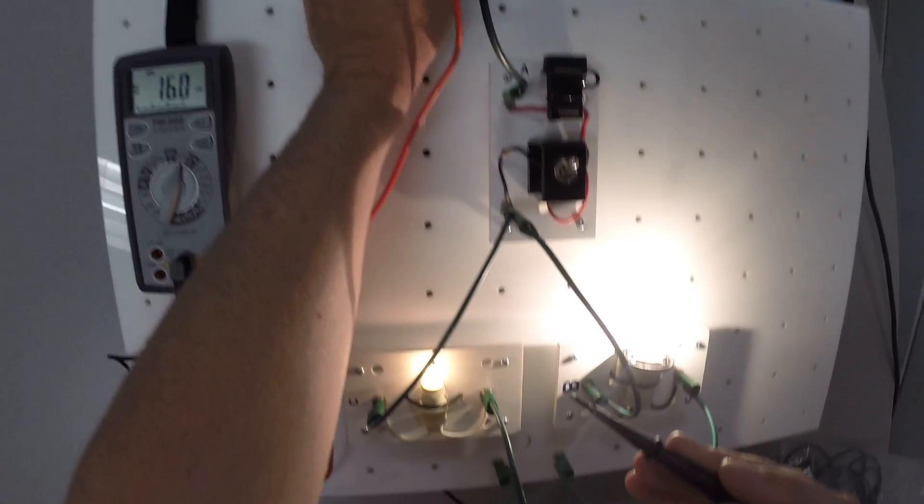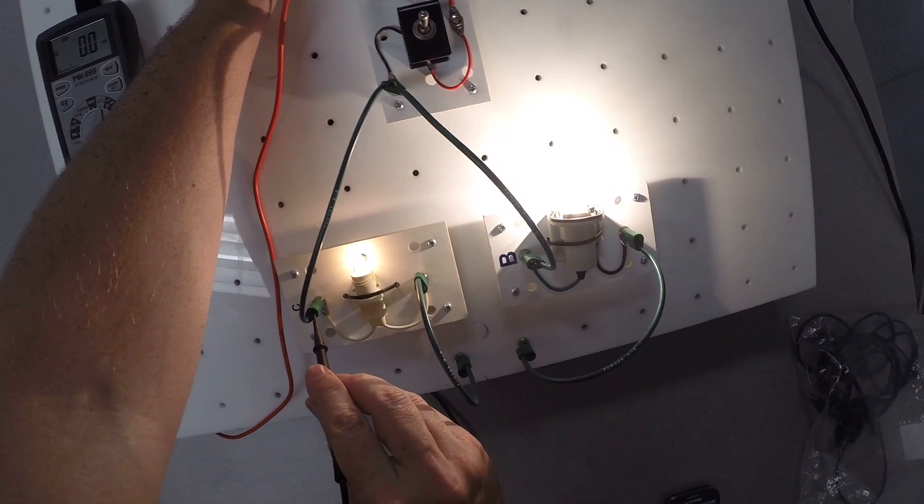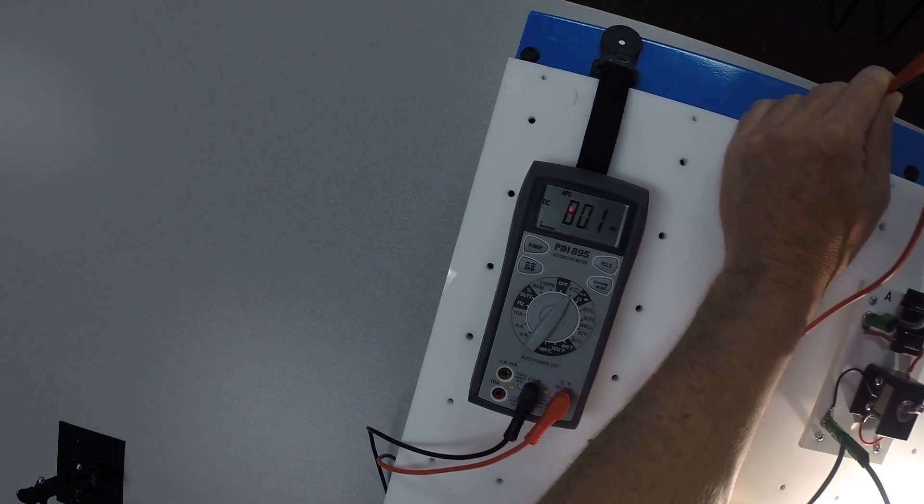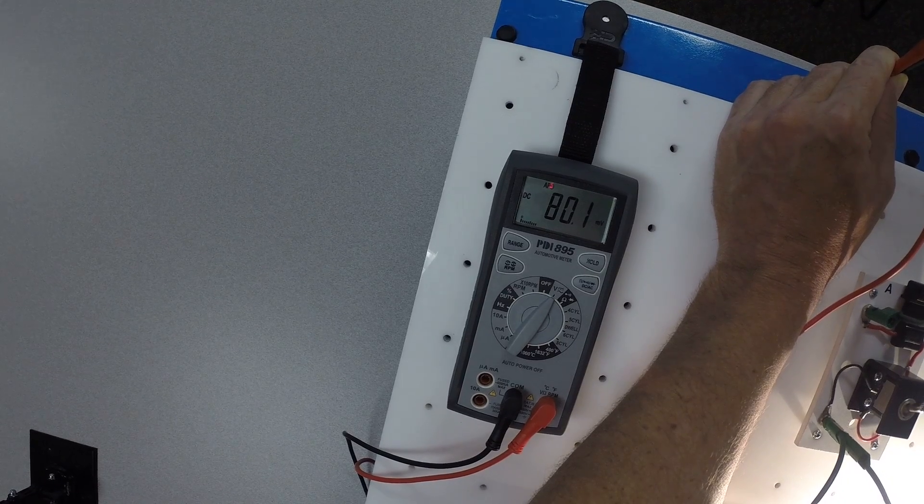We can take our black lead from the small bulb and we can put it over here where the large bulb is, and we can see on that branch of the circuit we're dropping 80 millivolts.